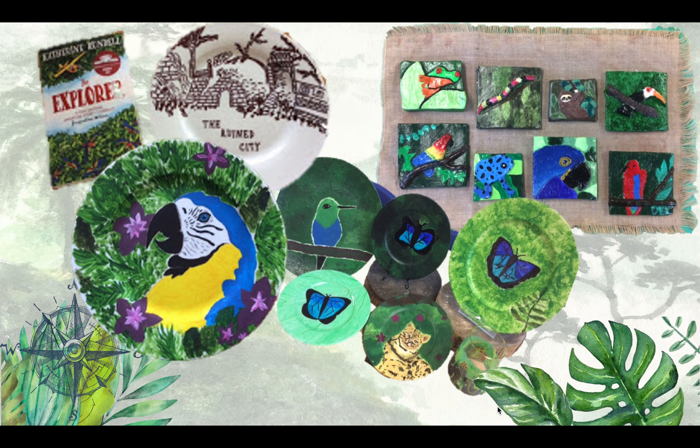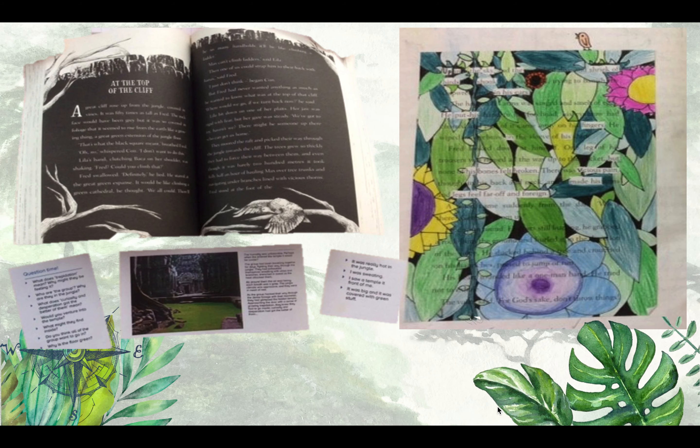The book lends itself to so many gorgeous art opportunities. These are plates made with acrylic paint and then a spray varnish on top. To make the clay tiles, they used air dry clay, then painted with acrylic paint and finished with a spray varnish on top. Here are some examples of their blackout poetry — using a page from the book, they selected words they wished to keep to make their poems and then illustrated over the words they didn't want to use, creating a blackout rainforest poem.